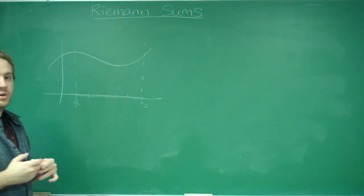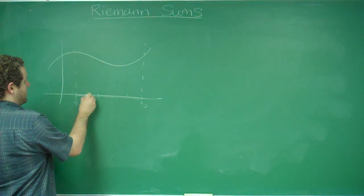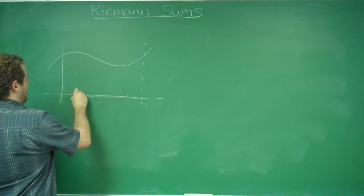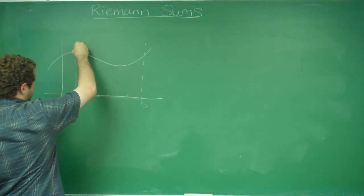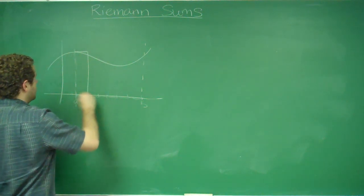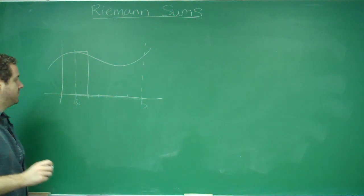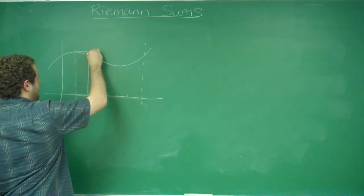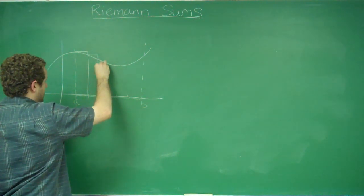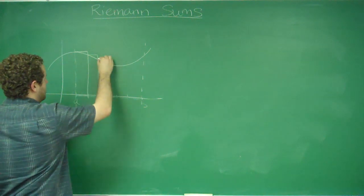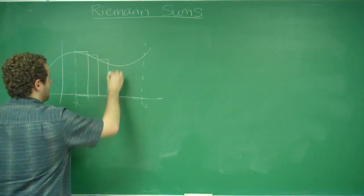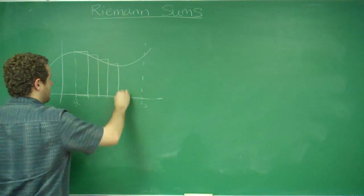So if you do the left endpoint, what you do is, for this rectangle, the first rectangle I chose, its height is going to be determined by the left endpoint. So it's going to look like that, and it's going to be a little bit over the graph in this case. And for every other rectangle, you would do the same thing. You would start the left endpoint and approximate by that.